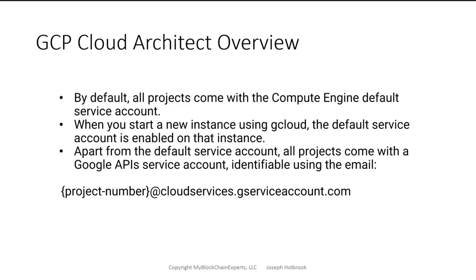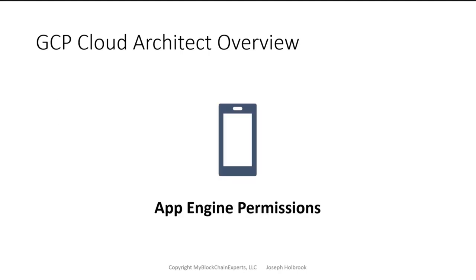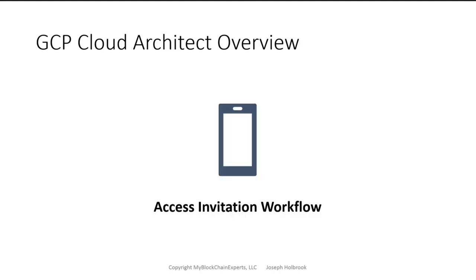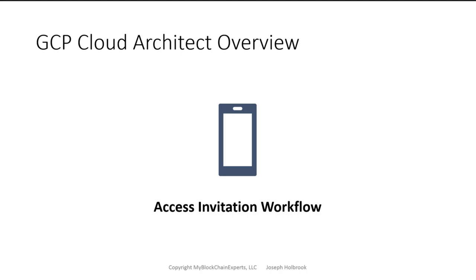When it comes to projects, a service account is always going to be identified as 'cloud services dot gserviceaccount dot com.' Anytime you see that, you know it's a service account. With App Engine, there are different levels of permission. There's also an invitation workflow — basically, we set an invitation, have the member click the link, accept it, and then log into the cloud.